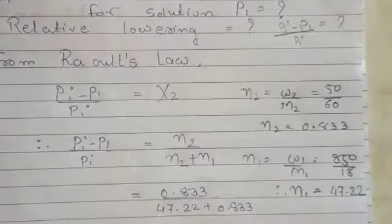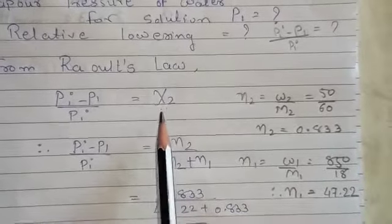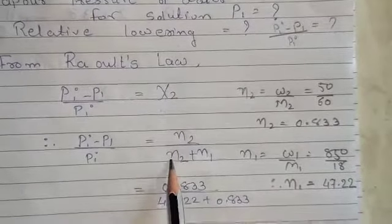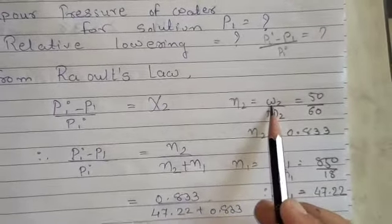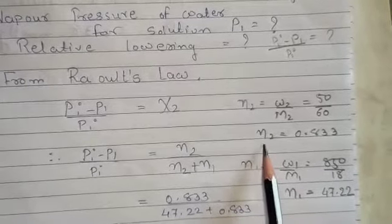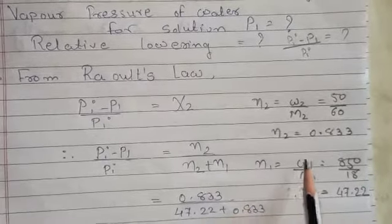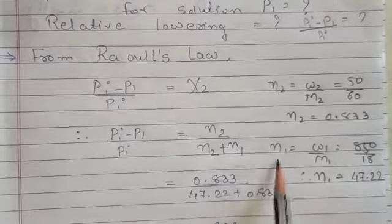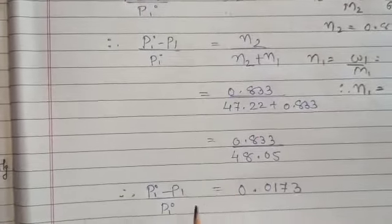According to Raoult's law: (P1° − P1) / P1° = mole fraction of solute (X₂). Mole fraction of solute = N2 / (N2 + N1). Moles of solute N2 = mass of solute / molecular mass of solute. Moles of solvent N1 = W1 / M1. Replace all values to get the expression.